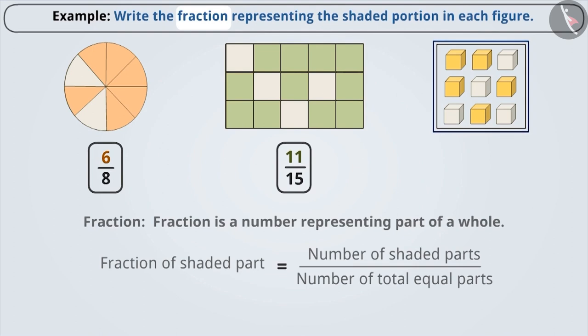In the third picture, there is a collection of 9 objects. Out of them, 5 objects are shaded. Can you tell which portion of the collection is shaded? Think for a while. You've got it right. Here, the group is divided into 9 equal parts and of them 5 parts are shaded. Therefore, the fraction is written as 5 by 9.